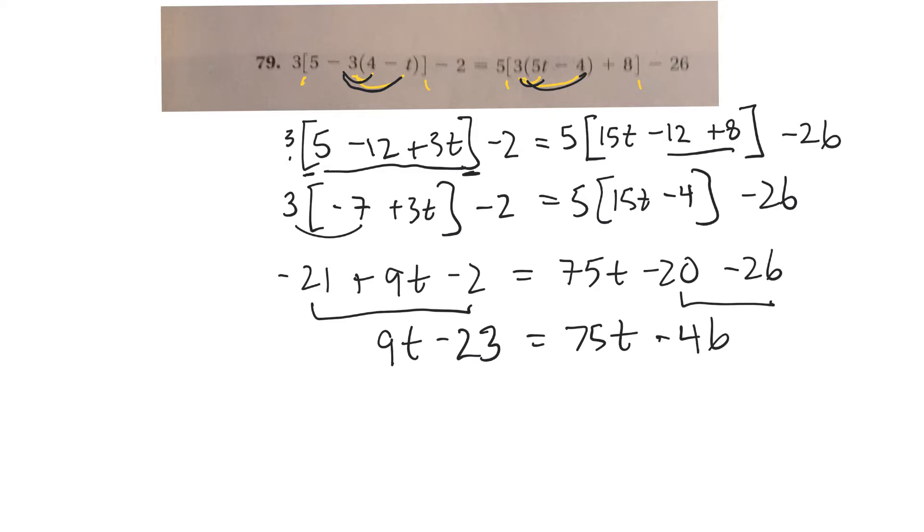Negative 20 minus 26 would be a negative 46, I think. And now let's move t's to one side. Move the 75 to this side. So it'll be 9t minus 75t.